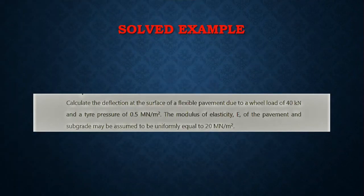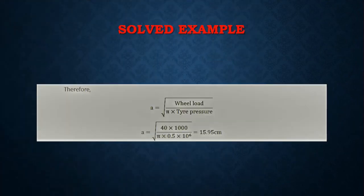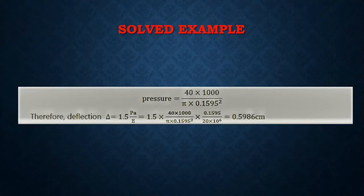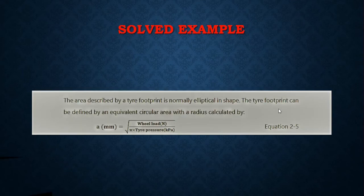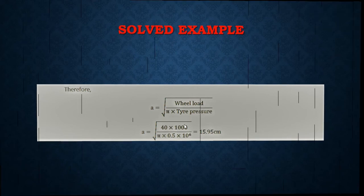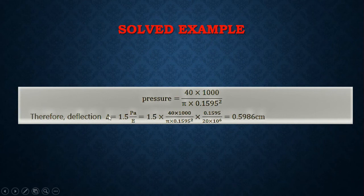This is a flexible pavement, so the formula for calculating deflection is: deflection equals 1.5 times pressure times a divided by E, where E is the elastic modulus of the pavement. The elastic modulus E is provided as 20 million newtons per meter square. Multiplying 1.5 by the pressure, then by the radius 'a', then dividing by E gives us the surface deflection.